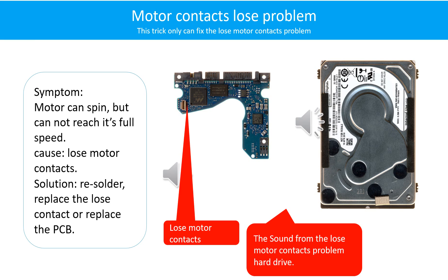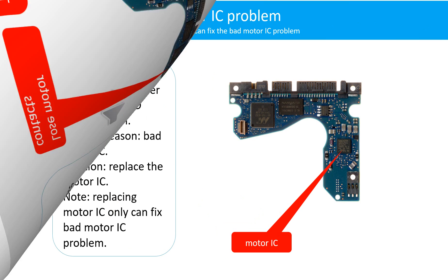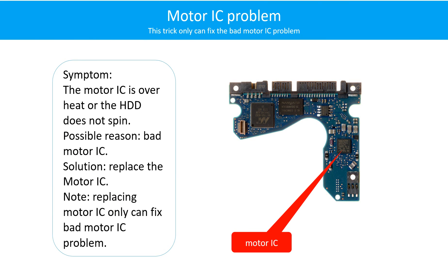Here is the sound from a hard drive with the loose motor contact problem. Motor contact loose problem — Symptom: the motor can spin but cannot reach its full speed. Cause: loose motor contacts. Solution: resolder or replace the loose contacts, or replace the PCB.